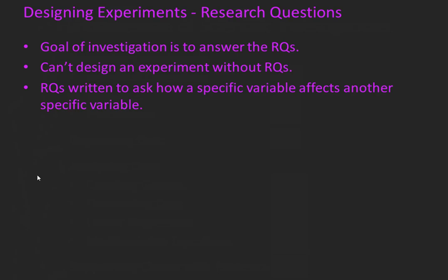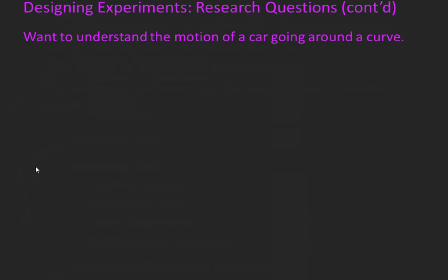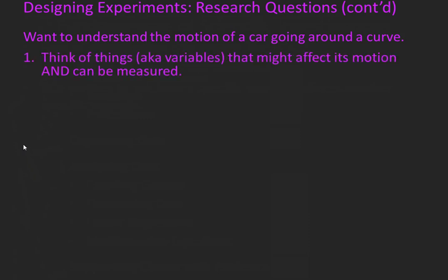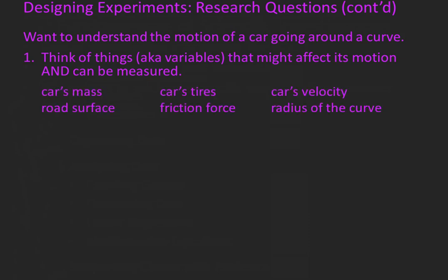Let's look at the process for creating a research question. In this example, we want to understand the motion of a car going around a curve. First, we want to think of things, also known as variables, that might affect its motion and can be measured. Things such as the car's mass, the car's tires, the car's velocity, road surface, friction force, and radius of the curve.